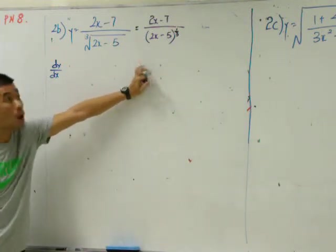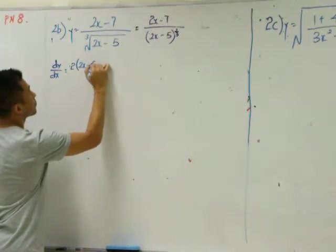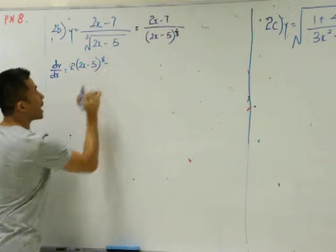If I want to use the quotient rule, I differentiate the top, keep the bottom, minus.